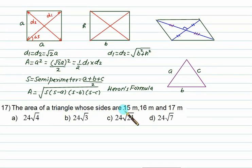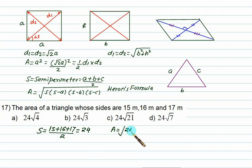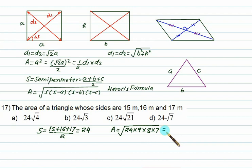Problem: Find the area of a triangle with sides 15, 16, and 17. The semi-perimeter s = (15 + 16 + 17) / 2 = 24. Applying Heron's formula: area = √(24 × (24−15) × (24−16) × (24−17)) = √(24 × 9 × 8 × 7), which gives 24√21 square meters.